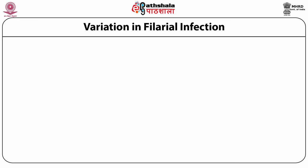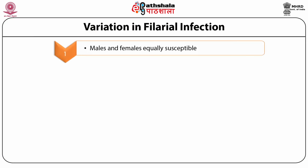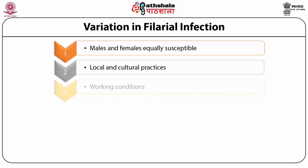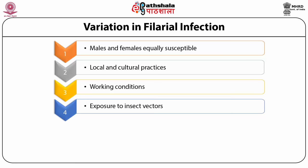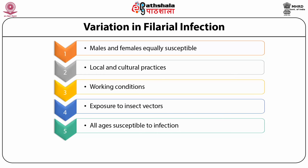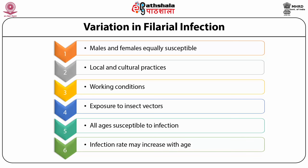The second kind, called Occult filariasis, is caused by microfilariae. These microfilariae, though circulating in the blood, are not known to cause any pathogenic effects except in severe cases. Both males and females are equally susceptible to filariasis. Nevertheless, one sex may be exposed more often depending upon local and cultural practices, working conditions and differences in exposure to insect vectors. Individuals of all ages are susceptible, though infection rate increases with age. The manifestation of acute and chronic filariasis usually occurs only after years of repeated and intense exposure to infected vectors in endemic areas.